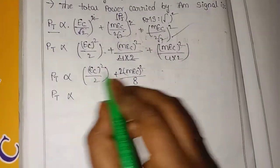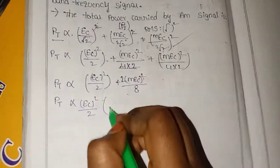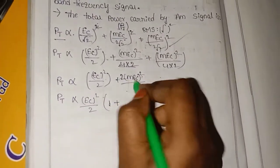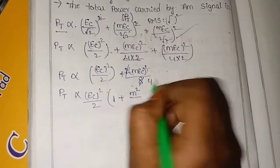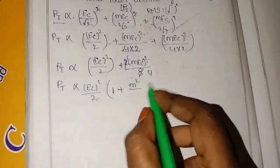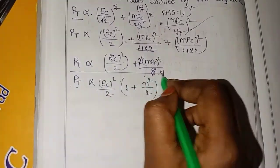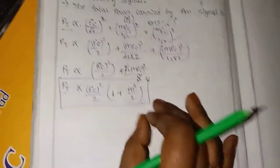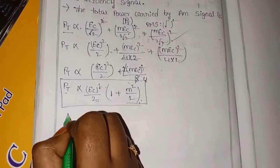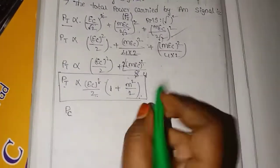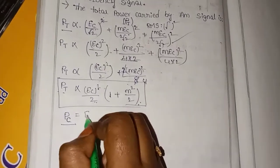Taking EC square by 2 as common, PT is proportional to EC whole square by 2 into (1 + M squared by 2). EC square by 2 is equal to carrier power PC. So total power PT equals PC into (1 + M² / 2).